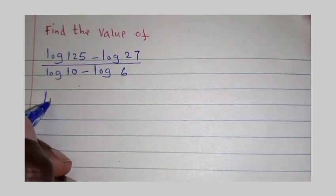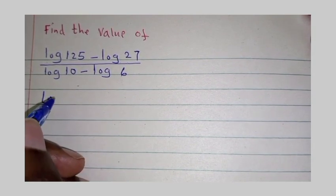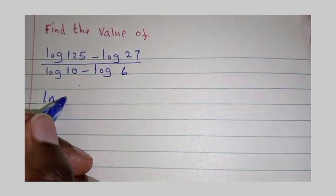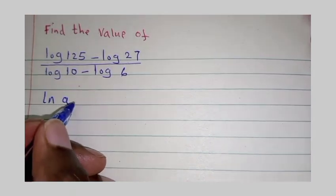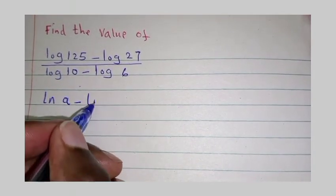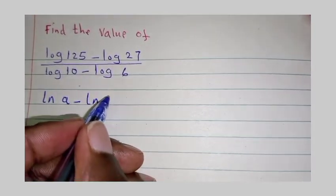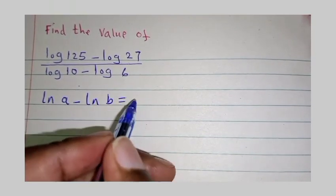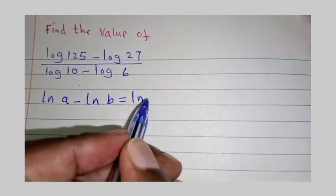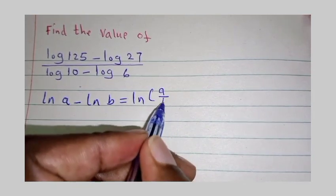Given log of a minus log of b, the result here, this law tells you that you divide a over b.